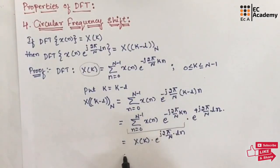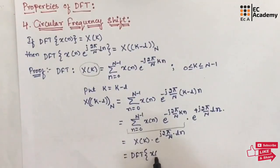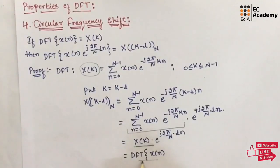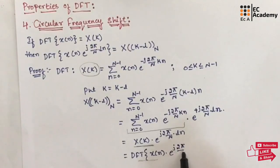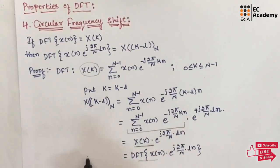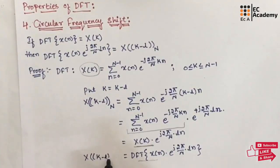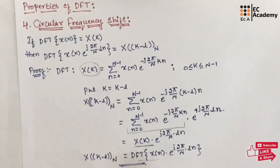We can write x of k as DFT of x of n. So this term is nothing but DFT of x of n multiplied by e to the power of j 2 pi by N into Ln. Towards the left hand side, it is x of k minus L mod N. So this is the proof for the circular frequency shift property of DFT.